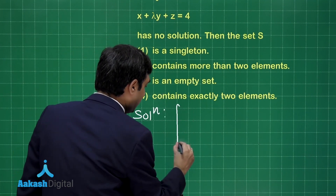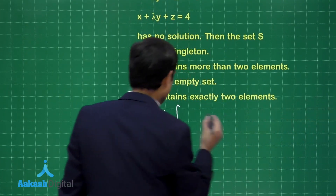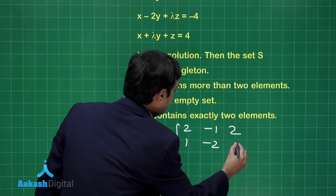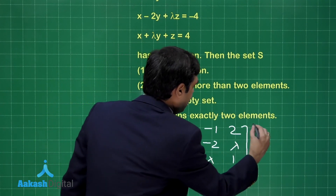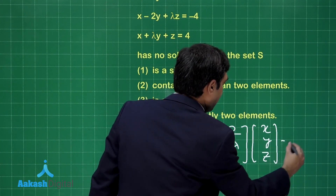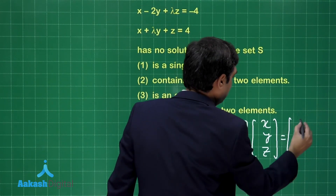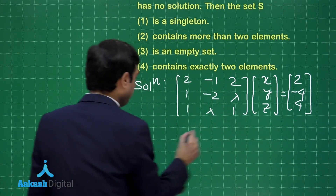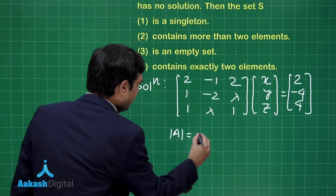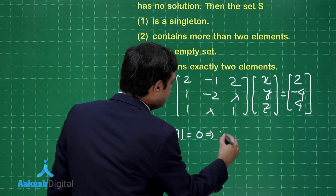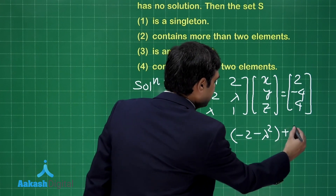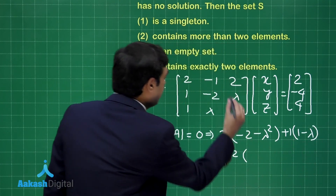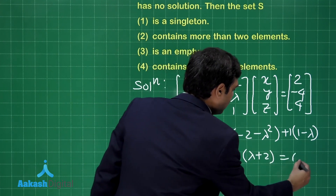Writing the matrix system Ax = b: the coefficient matrix has rows [2, -1, 2], [1, -2, lambda], [1, lambda, 1], with b = [2, -4, 4]. Expanding and simplifying, setting determinant A equal to zero gives: 2 times (minus 2 minus lambda²) plus 1 times (1 minus lambda) plus 2 times (lambda plus 2) equals zero.